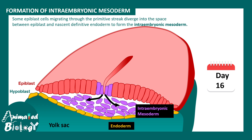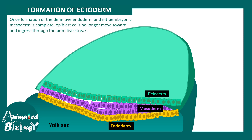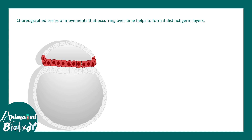Some of the epiblast cells migrating through the primitive streak diverge into the space between the epiblast and the definitive endoderm — this becomes the intraembryonic mesoderm. This violet layer will eventually become the mesoderm of the embryo. Finally, the ectoderm forms. Once the formation of the definitive endoderm and intraembryonic mesoderm is complete, epiblast cells no longer need to ingress through the primitive streak, and they give rise to the ectoderm layer. Three germ layer formation is thus complete.